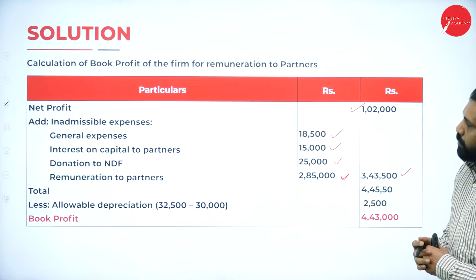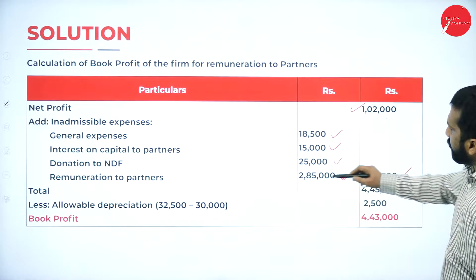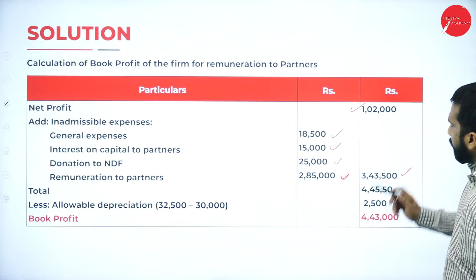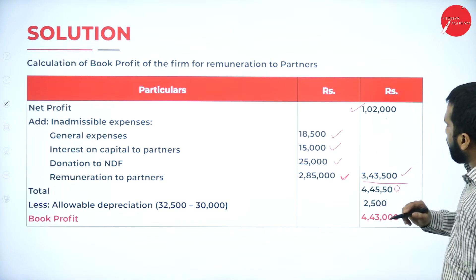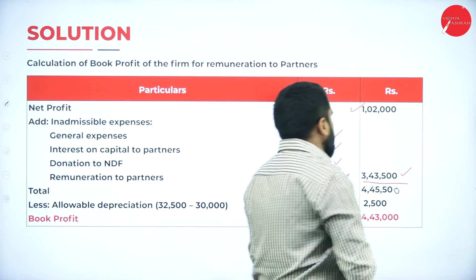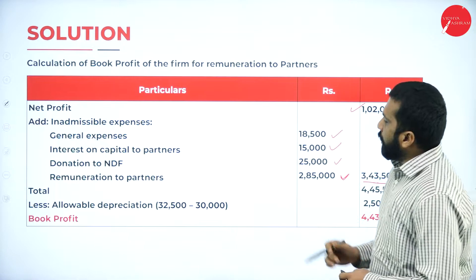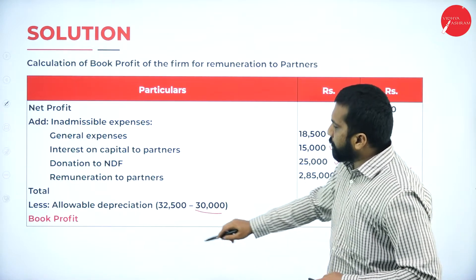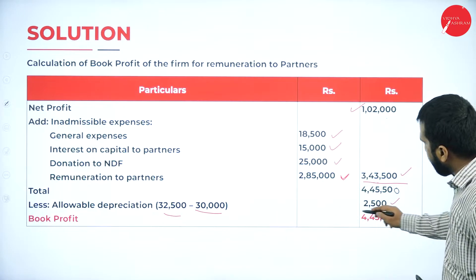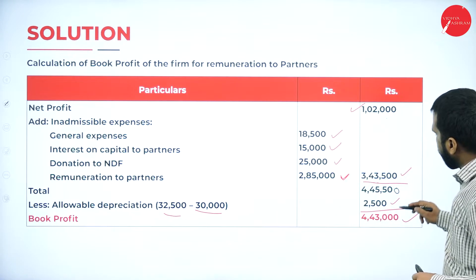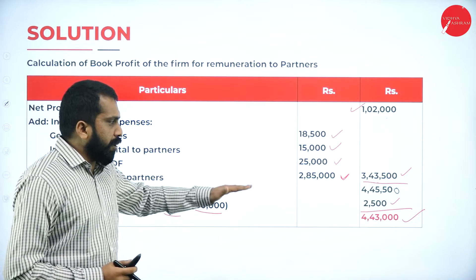Adding 3,43,500 to 1,02,000 gives 4,45,500. Less allowable depreciation: as per accountancy 30,000, but as per income tax 32,500 — excess of 2,500. So minus 2,500. You get 4,43,000. Your book profit is 4,43,000. Book profit calculation is done.